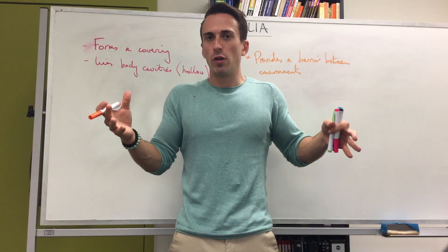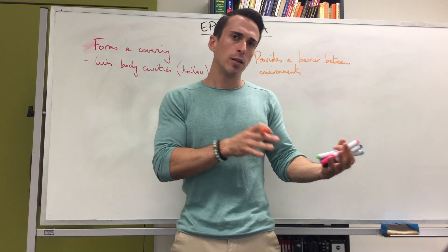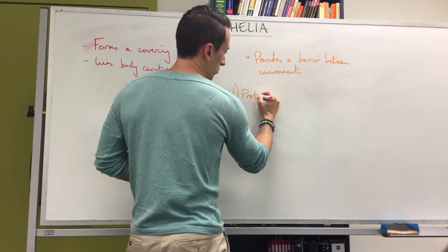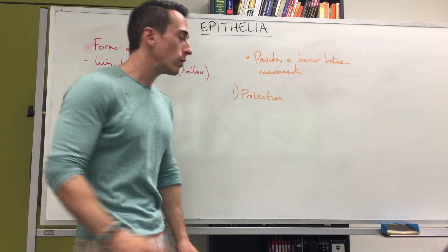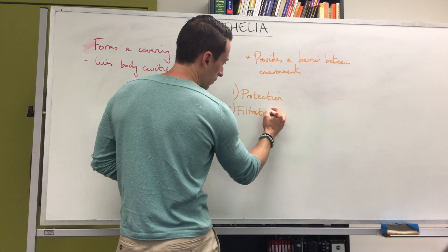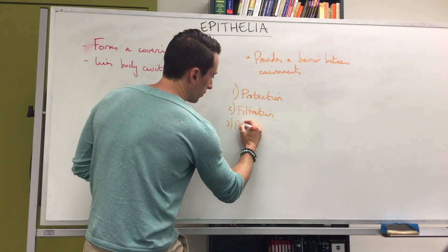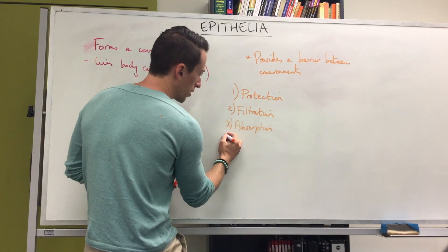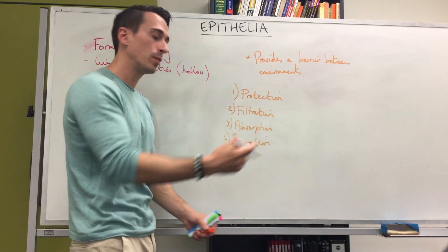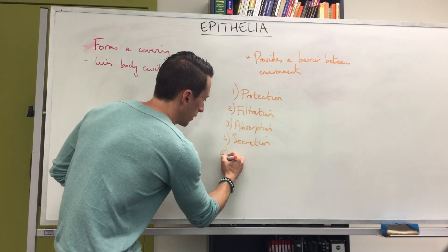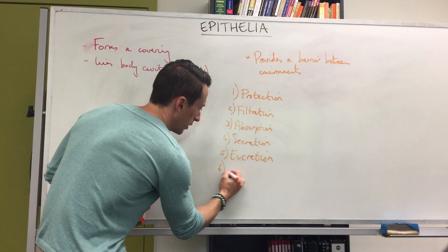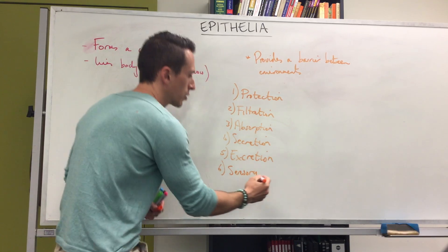What are the general functions of epithelial tissue? It forms a covering and acts as a barrier, so one function is protection. It also provides a means of filtration, plays a role in absorption, secretion — secreting substances from cells — excretion, which is getting rid of substances from the body, and finally it can play a role in sensory reception.